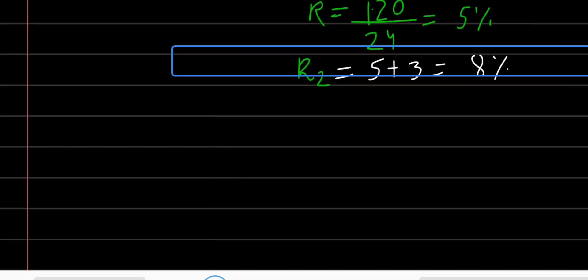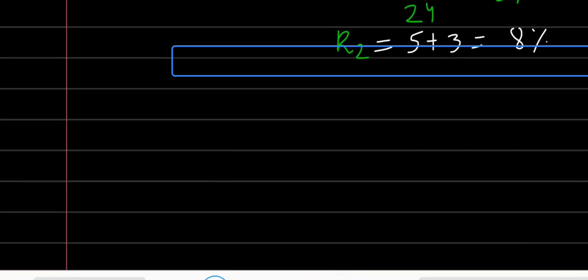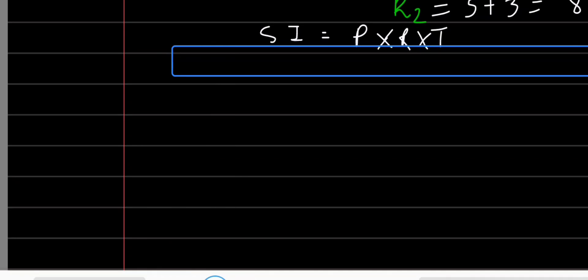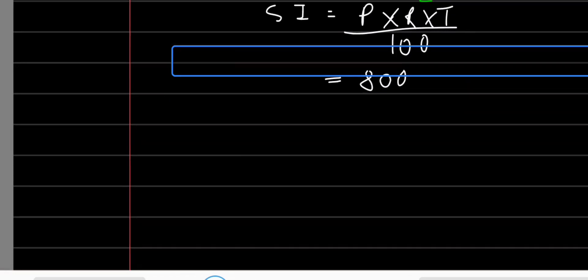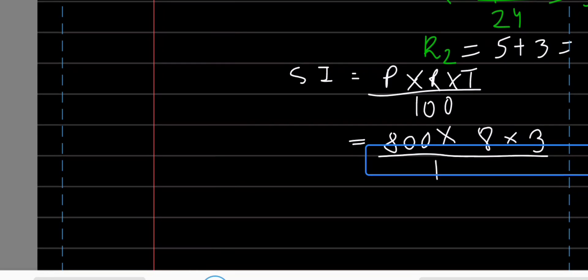Now find the new amount. Amount equals principal plus simple interest. Using the SI formula with the new rate: SI equals P into R into T divided by 100, where P is 800, R is 8 percent, and T is 3.